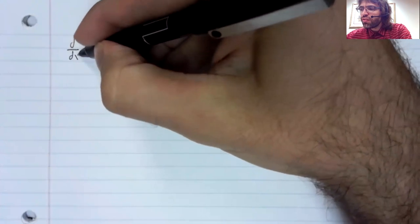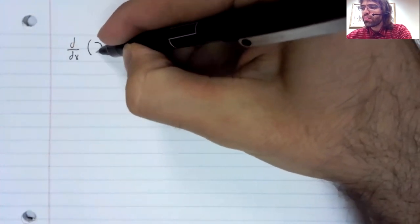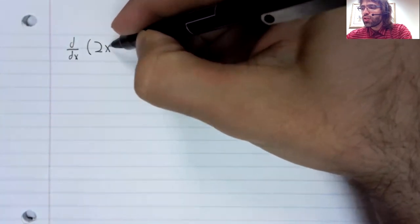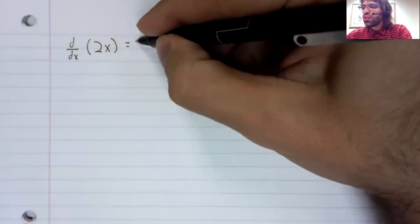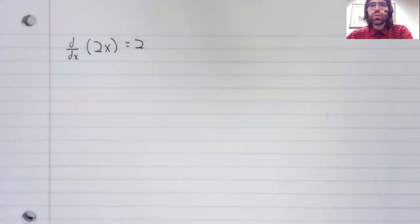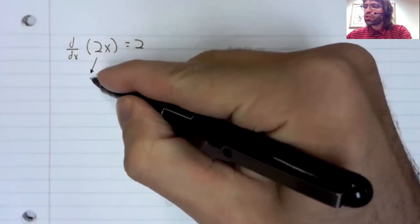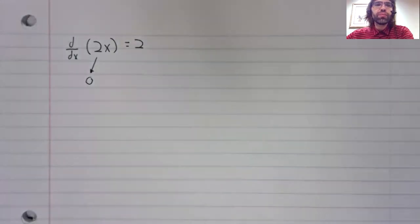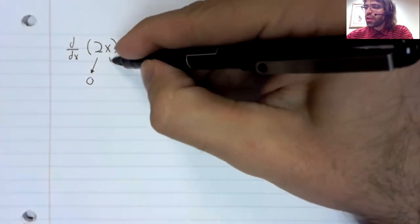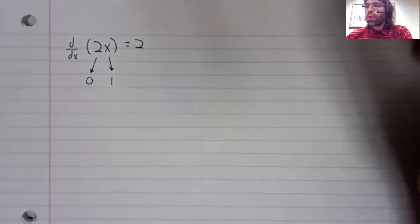We can demonstrate that very quickly. The derivative of 2x is 2. And the derivative of 2, the constant function 2, is 0. And the derivative of x is 1.